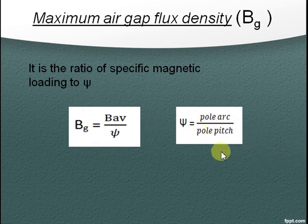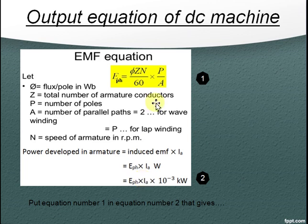Output equation of DC machine: We know EMF equation of a DC machine is equal to phi ZN by 60 into P by A, where phi is flux per pole in Weber, Z is the total number of armature conductors, P is the number of poles, A is the number of parallel paths, it is 2 for wave winding and it is equal to number of poles P for a lap winding, N is the speed of armature in rpm.